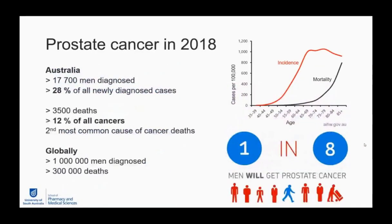In prostate cancer in Australia, more than 17,000 men are diagnosed every year — that represents more than 28% of newly diagnosed cases. Each year there are more than 3,500 deaths, representing 12% of all cancers, making it the second most common cause of cancer-related deaths, second only to lung cancer. Globally, more than a million are diagnosed every year with over 300,000 deaths. Incidence and mortality are strongly linked with age, occurring mainly in men over 40.